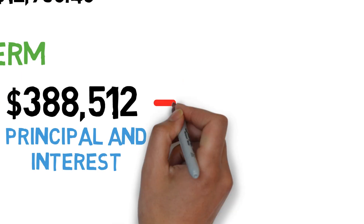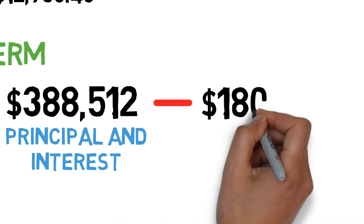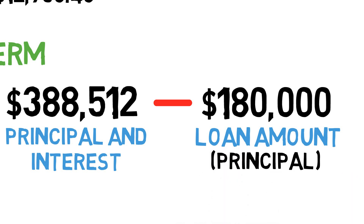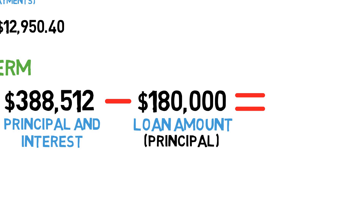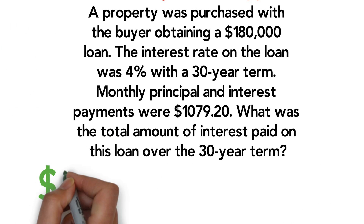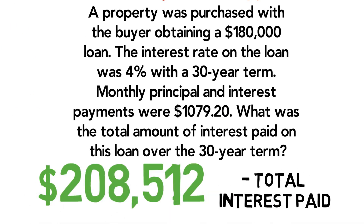We then subtract out the loan amount of $180,000, which is the principal. The principal is your loan amount. The balance will be how much had to be applied to interest. So if we take $388,512 minus $180,000, the amount going toward interest over the entire 30 years was $208,512. Our answer is $208,512.